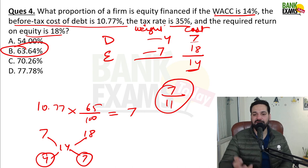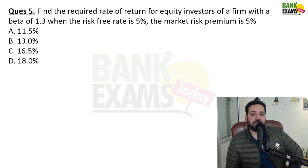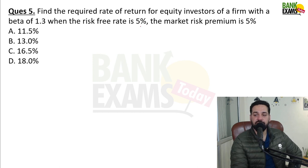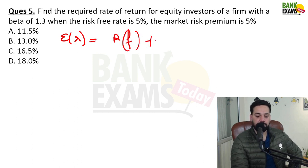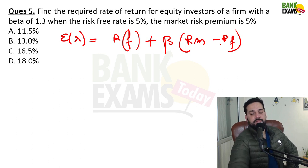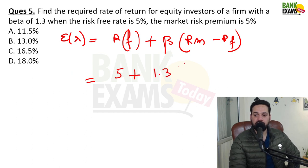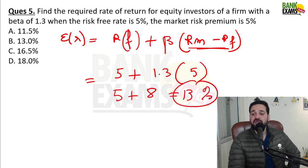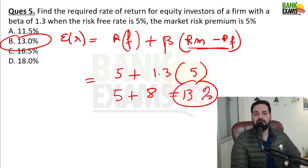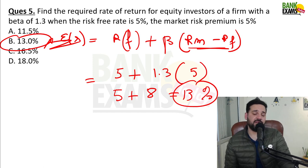Find the required rate of return for equity investors of a firm with beta 1.3, risk-free rate 5%, and market risk premium 5%. Using the formula: Expected return = RF + beta × market risk premium = 5% + 1.3 × 5% = 5% + 6.5% = 11.5%... coming out to be 13%. So 13% is the required rate of return. Very simple questions we have done today in a short session.